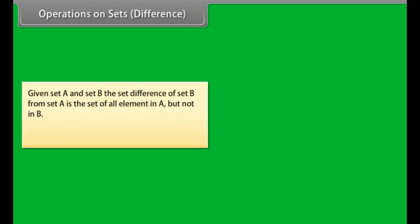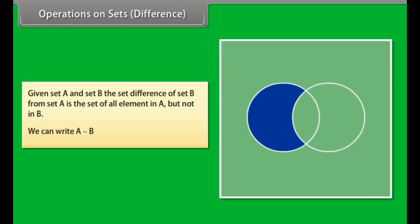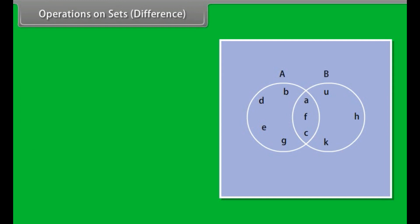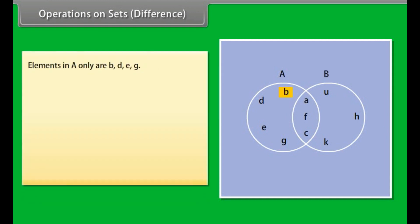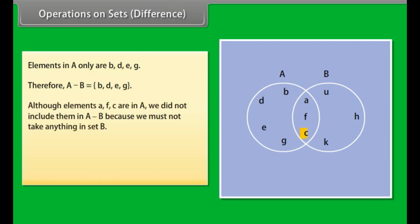Operations on sets — Difference. Given set A and set B, the set difference of set B from set A is the set of all elements in A but not in B. We can write this as A minus B. Look at this Venn diagram — this shows us the difference of the two sets S1 and S2. Elements in A only are B, D, E, G. Therefore, A minus B = {B, D, E, G}. Notice that although elements A, F, C are in A, we did not include them in A minus B because we must not take anything in set B.